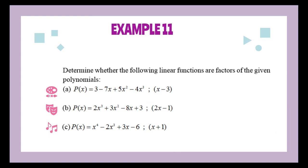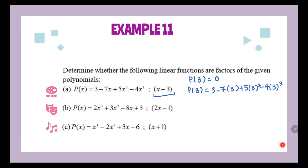Let's look at example 11a: determine whether the following linear functions are factors of the given polynomial. If x minus 3 is a factor, then substituting 3 should give 0 as the remainder. We calculate p(3) = 3 minus 7 times 3 plus 5 times 3² minus 4 times 3³. When we calculate this, we get negative 81. So p(3) is not 0, therefore x minus 3 is not a factor.